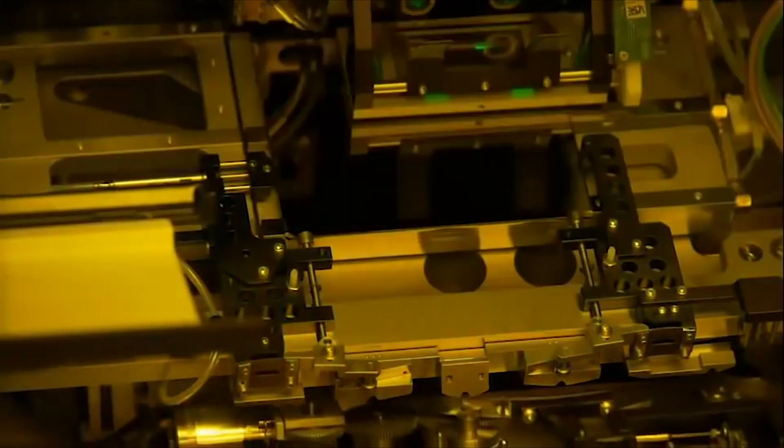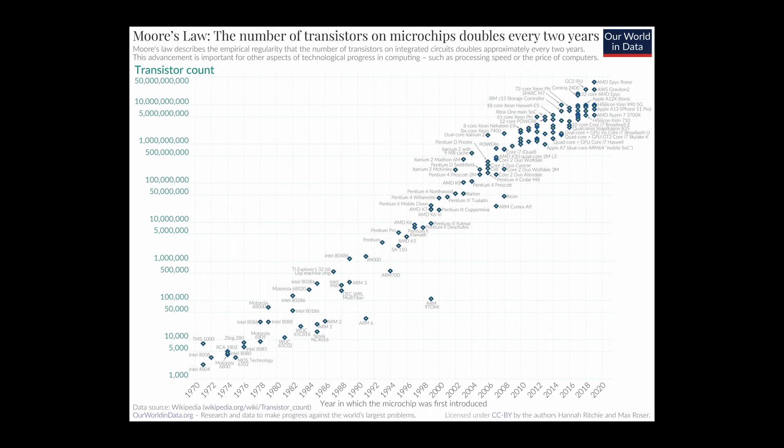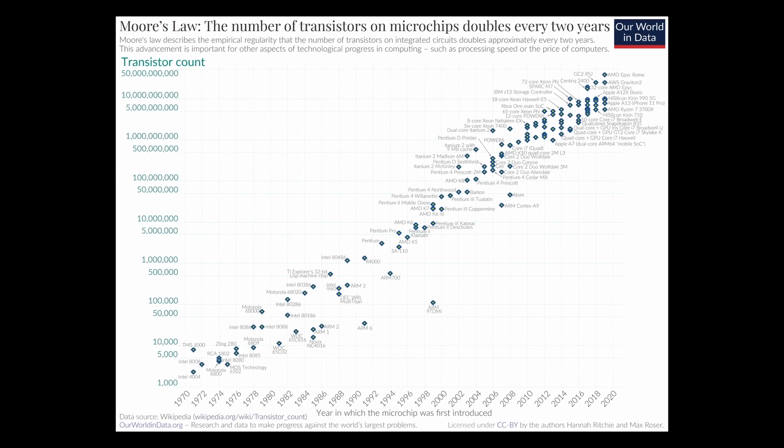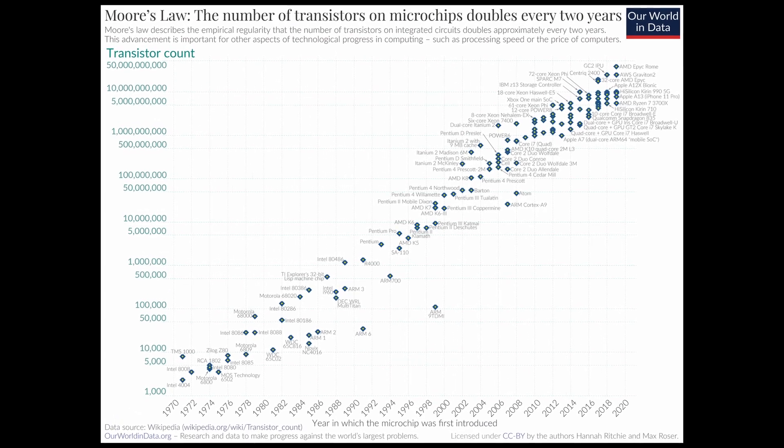In 1965, future co-founder of Intel Corporation, Gordon Moore, predicted that the number of transistors on a given microchip would double every two years. Coined by Caltech Professor Carver Mead, Moore's law has held true to course over the intervening decades.